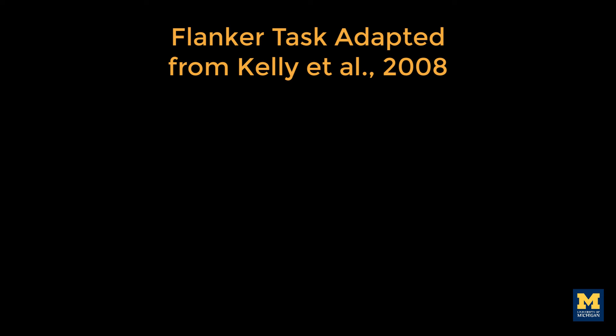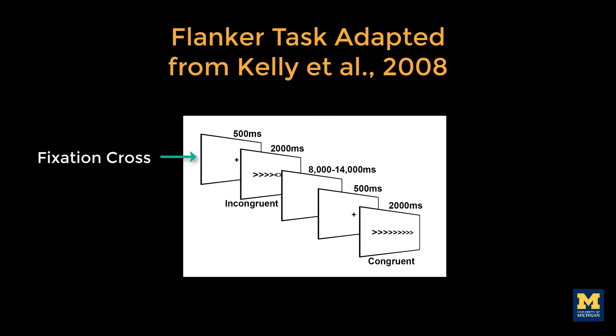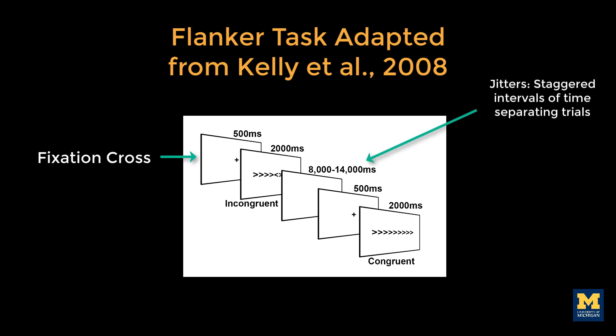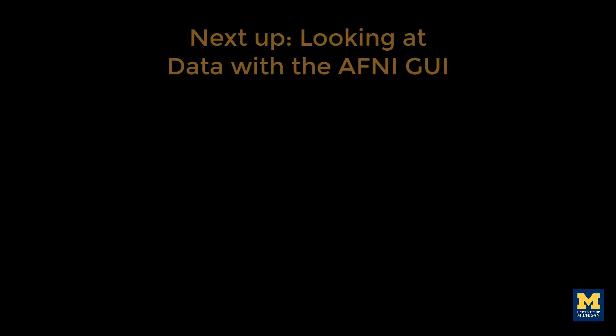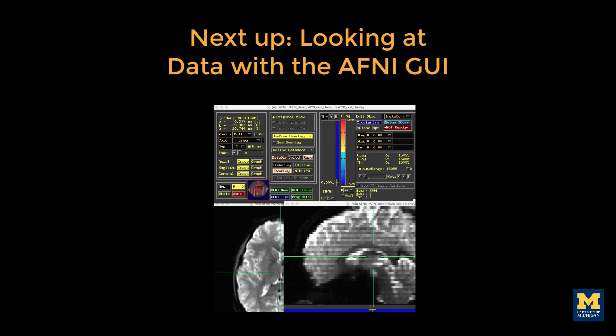Let's finish with an illustration of the Flanker task for this study, adapted from Kelly et al. 2008. The subject is shown a fixation cross to focus his attention on the center of the screen, and then either a congruent or incongruent Flanker trial is presented for 2,000 milliseconds. During the trial, the subject presses either the left or the right button. Note that because this is an fMRI study, the timing of the experiment will be different than in a behavioral experiment. The most important difference is the use of jitters, or intervals of different lengths, to separate each presentation of a Flanker trial. This is necessary in order to estimate the BOLD response, or brain activity, for each condition. Later on, we'll learn how to create timing files indicating when each trial occurred relative to the beginning of the experiment. But first, let's take a look at this imaging data using the AFNI image viewer.